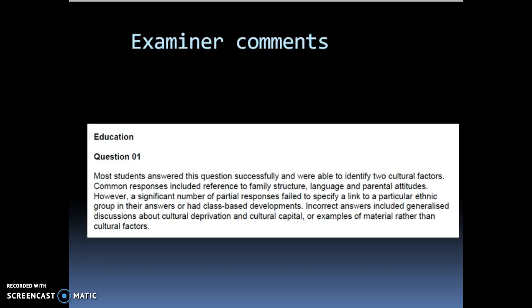So, just a bit about the examiner comments. Most students answered this question quite successfully. They were able to identify two clear cultural factors and the common responses were the family structure, your language, parental attitudes. What they have mentioned here is that some of the responses didn't link to a particular ethnic group. So, that meant that they often overlapped with class and that meant that they ended up not scoring or they only got partial marks for the identification points, not for the application to the ethnic group points. So, just to review, that is the 4 mark question. Make sure that you are starting each new point on a new line and you are clearly identifying the three hooks from the question: the cultural, the ethnic group and the achievement level.